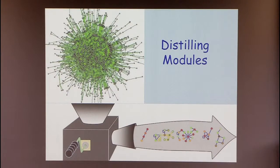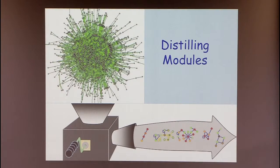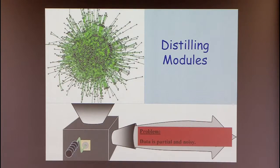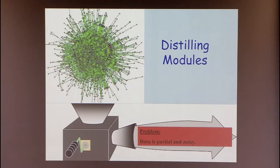We are interested in building a machine that will take the hairball and produce some modules that can be interpreted and followed. The reason we think it's good to use cross-species information is because the data is so partially noisy, and by using information from different species, we would be able to enhance our predictions.